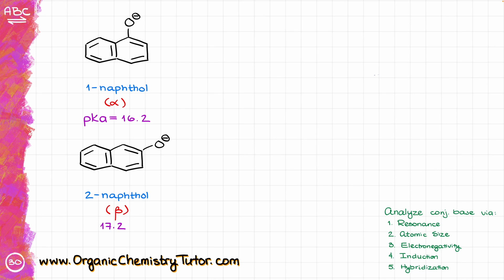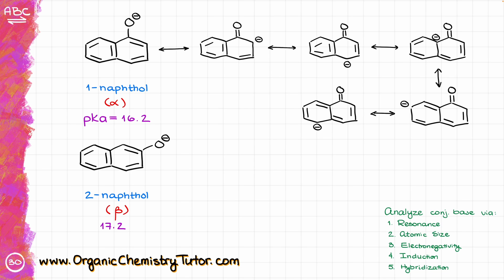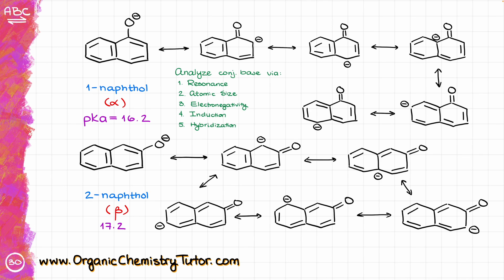Now, to go down my laundry list of factors, I first need to show all of my resonance structures, because I have quite a few in each case. If you are drawing your structures along with me, and I sure hope you are, you should be seeing five additional resonance structures for 1-naphthol, and similarly, you should get five additional resonance structures for the conjugate base we get from 2-naphthol. And that's where we are going to have a bit of a problem.